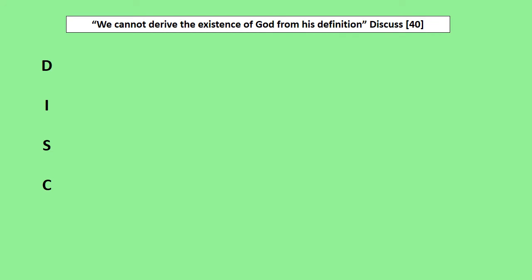So this is the essay I want to look at. I just want you to put this as your title: 'We cannot derive the existence of God from his definition.' Obviously it's a 40-mark question like they all are. I'll just go through what I do in the introduction. There won't be a lot written on the screen here — I just put the acronym down as a guide for what I'm going to say.